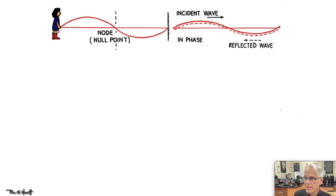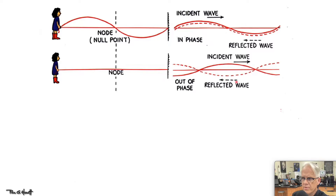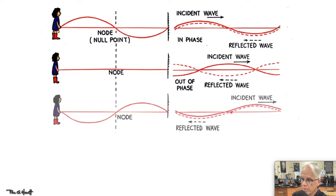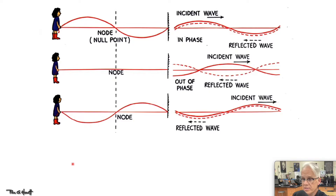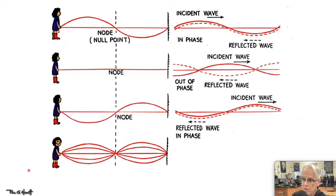The incident wave is the solid line and the reflected wave is the dotted line. At this point they are perfectly in phase. A moment later, the reflected wave and the incident wave are perfectly out of phase — here we have destructive interference and zero amplitude. A moment later, the incident wave has moved to the right, the reflected wave to the left, and again we have our node and the two places where we have maximum displacement. The overall effect is what we call a standing wave.